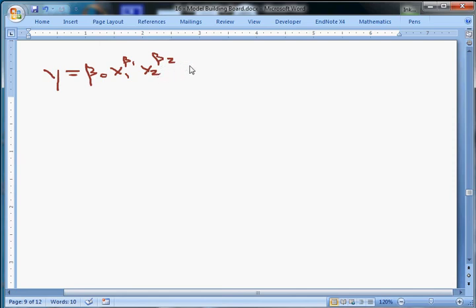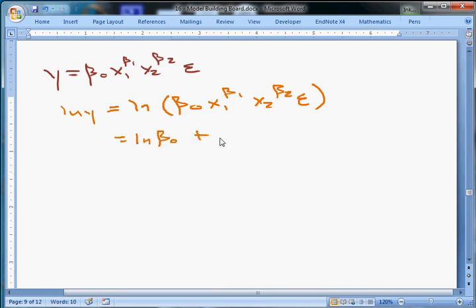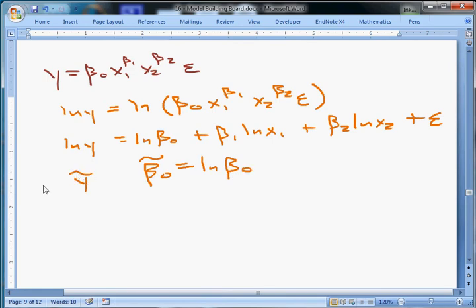Another one you might use is what's called a reciprocal transformation, where instead of using y, you use 1 over y. So we replace y with its multiplicative reciprocal, with 1 over y. And you use that as the dependent variable. And those are just some examples of the things you can do. There's really a lot you can do. And so, as it turns out, there's really not that much that you can't do with this approach, with the general linear model.